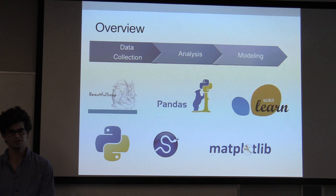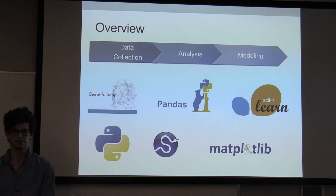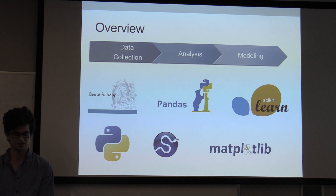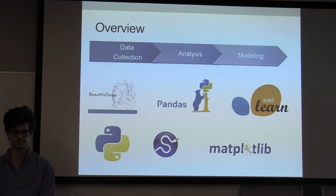I used a standard Python toolkit, including scraping ESPN box scores using BeautifulSoup, and then transforming data using pandas, and then modeling with sklearn.